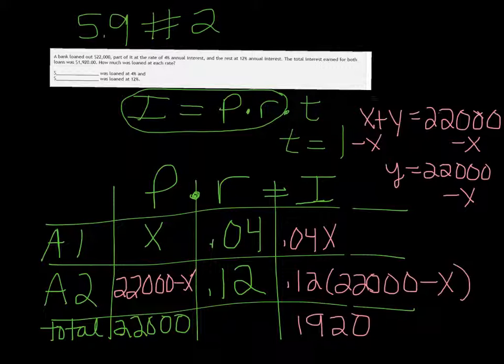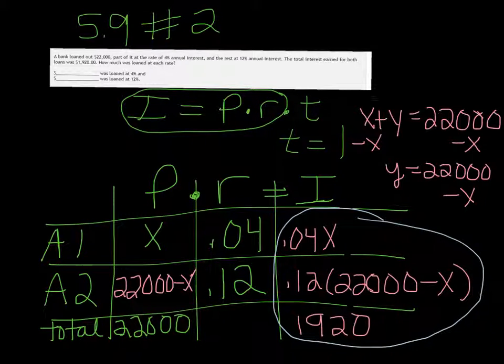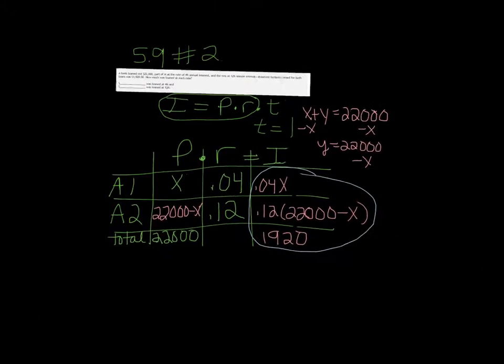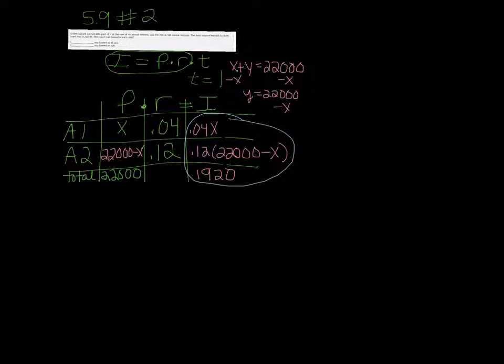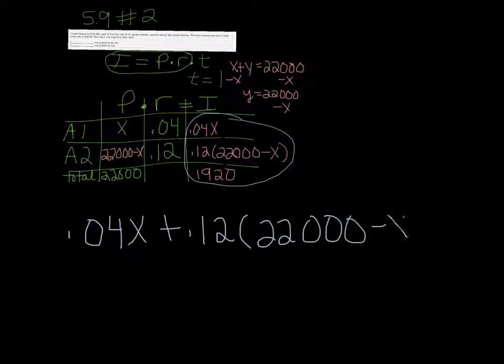So this third column here, this I column, is what we're going to use to solve to make an equation and solve it. So we're going to shrink that up a little bit. So we take the interest in one account, .04X, we add it to the interest in the other one, the .12 times 22,000 minus X. And it's got to equal $1,920.